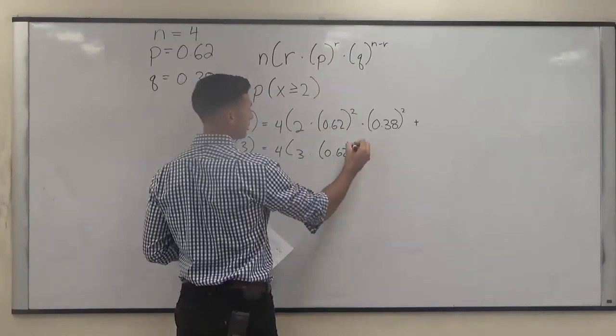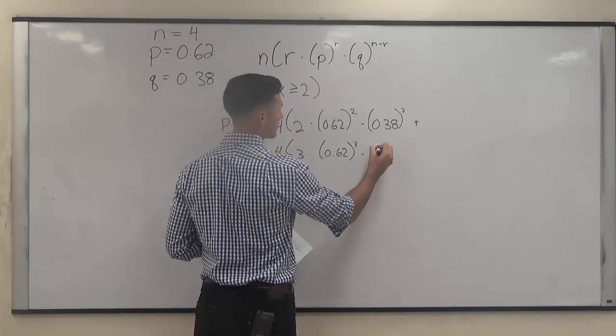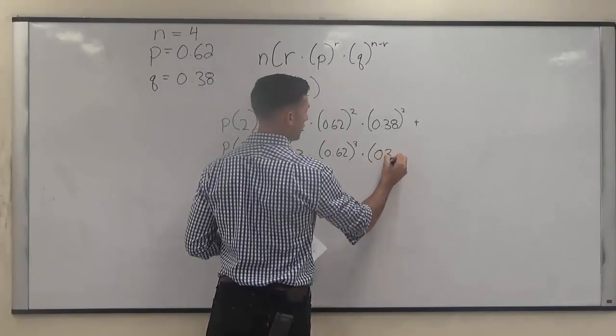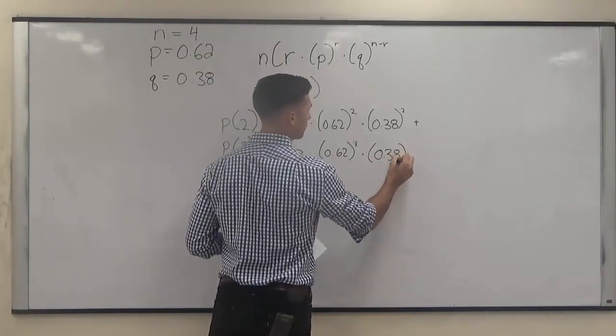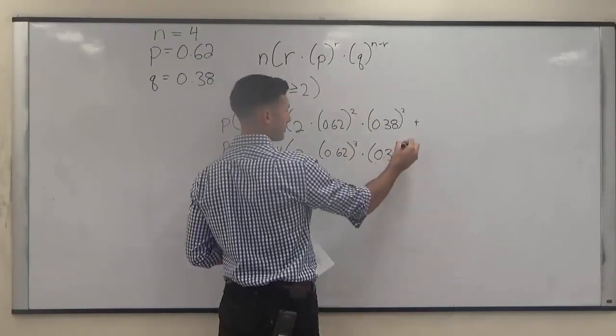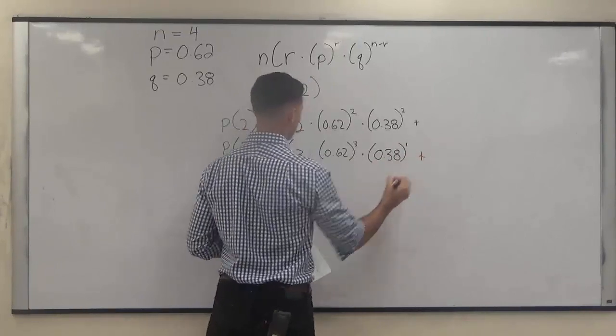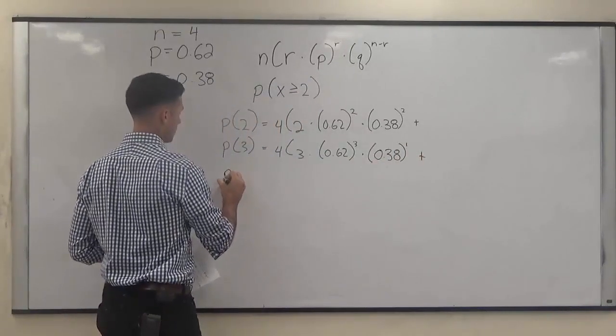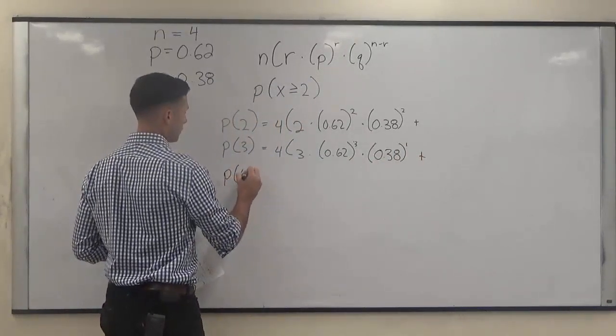So n minus r equals 4 minus 2. Plus the probability of 3, which is 4 choose 3 times 0.62 to the 3 times 0.38 to the 4 minus 3.